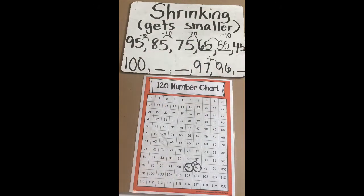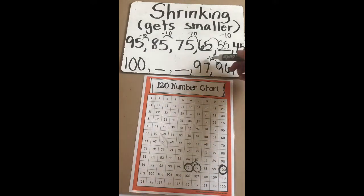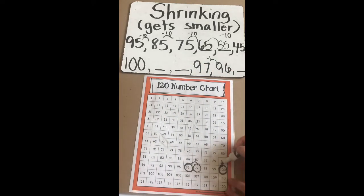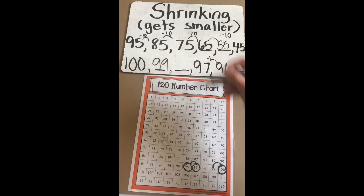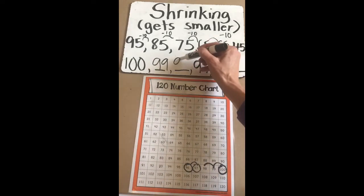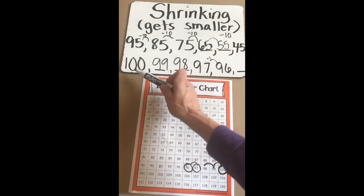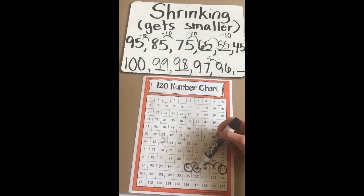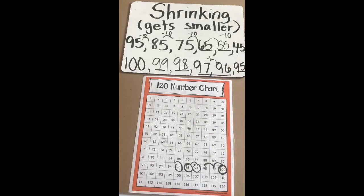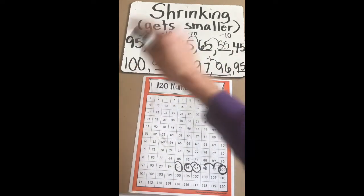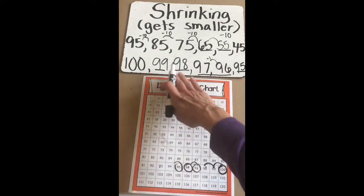Now I'm going to start at the beginning and look at 100. My rule is just taking away one each time, or getting one less. One less than 100 is 99. One less than 99 is 98. So we have 100, 99, 98, 97, 96, and our last number is 95. Just these two numbers right here together made it easy to look at my 120 number chart and figure out that the rule was just one less. I could go back to the beginning of my pattern and figure out the rest of the missing numbers.